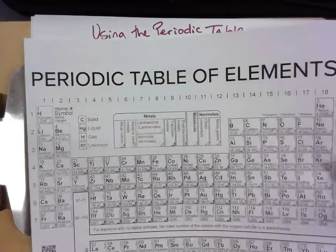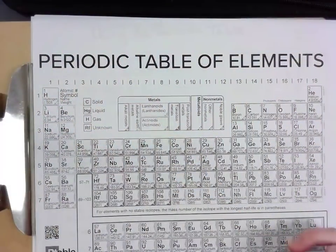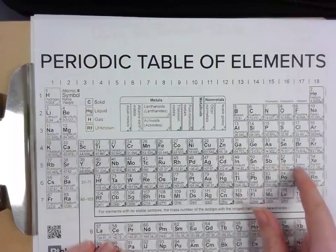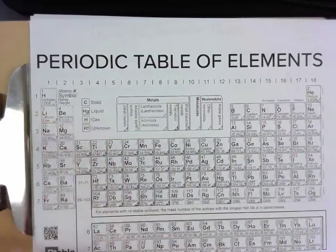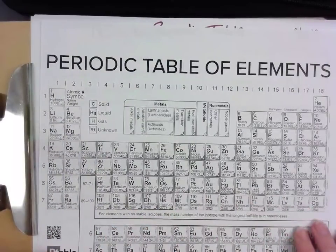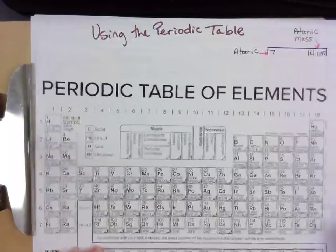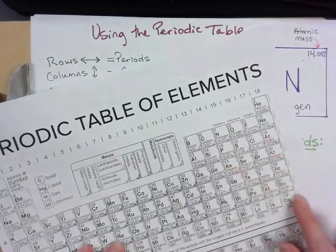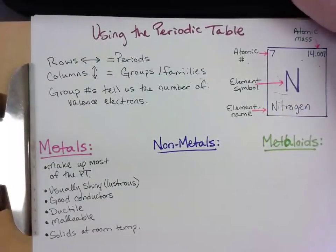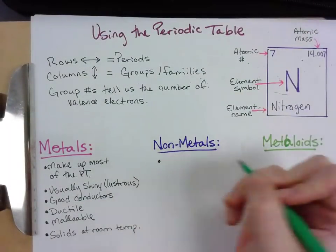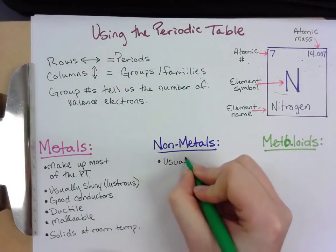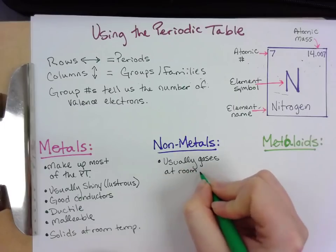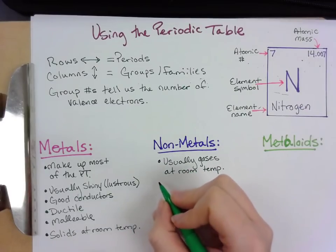Our metals, looking at our sheet, are basically everything — we're going to get rid of hydrogen, hydrogen is not a metal — but almost everything from here down to about this zigzag line is a metal, including these guys down here, your inner transition metals. Those guys on the zigzag line are going to be the metalloids, and then everything on the right of them is going to be a non-metal, plus hydrogen. Non-metals are usually gases at room temperature.